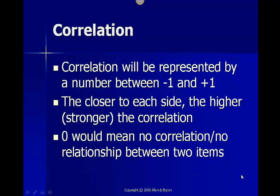Our correlation will be represented by a number somewhere between negative 1 and plus 1. The closer we get to either negative 1 or plus 1, the higher or stronger our correlation. Having a zero would mean that we have no correlation, or that there's no relationship between the two items.